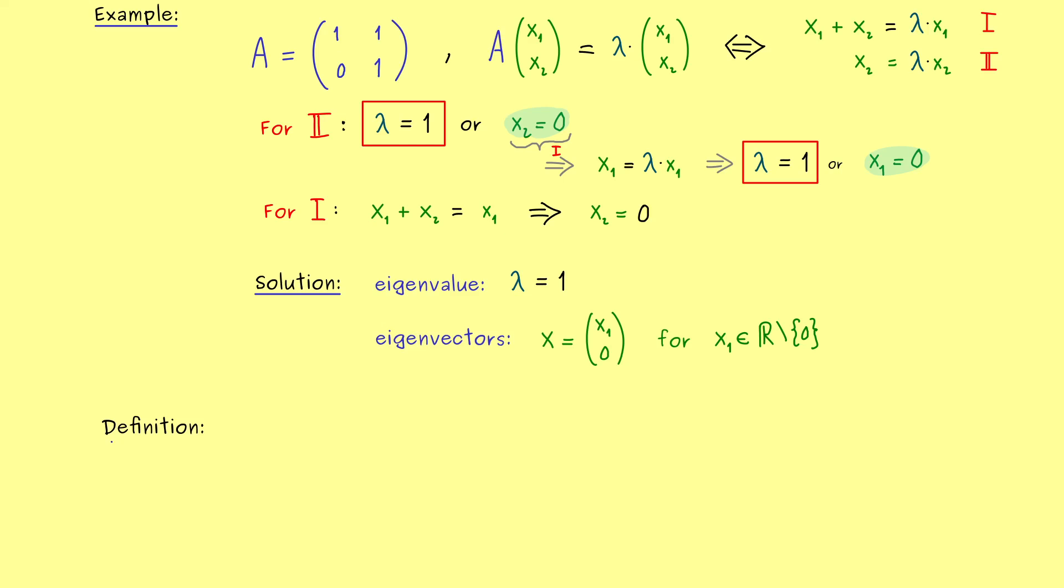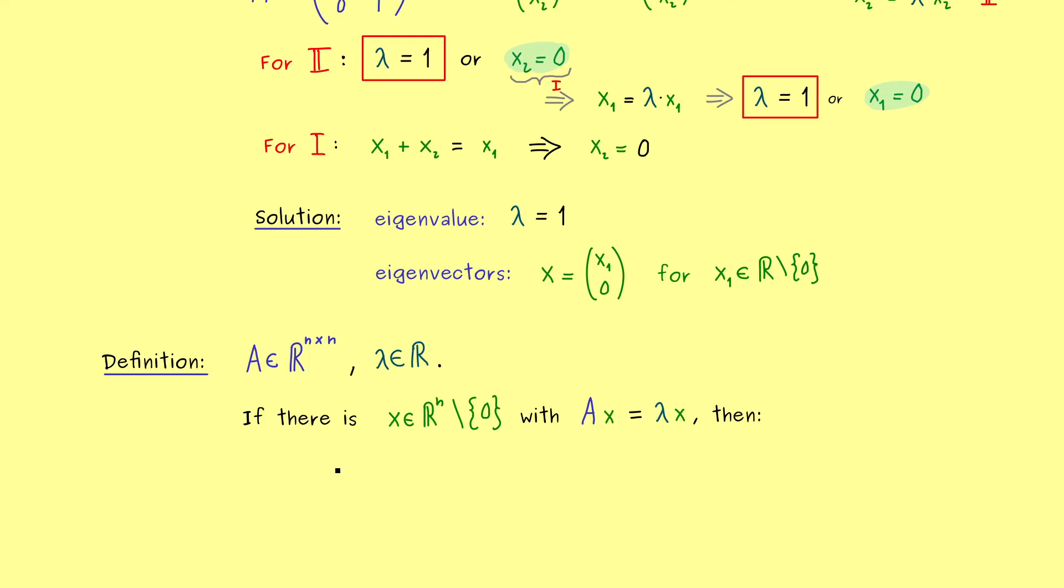Okay, and now to close this video today, let's write down the formal definition. So you already know, for the eigenvalue question, we need a square matrix. And the scalar factor we denote with lambda again. And now the definition reads, if we find a non-vanishing vector x that satisfies the eigenvalue equation with A and lambda, then lambda is called an eigenvalue of the matrix A.